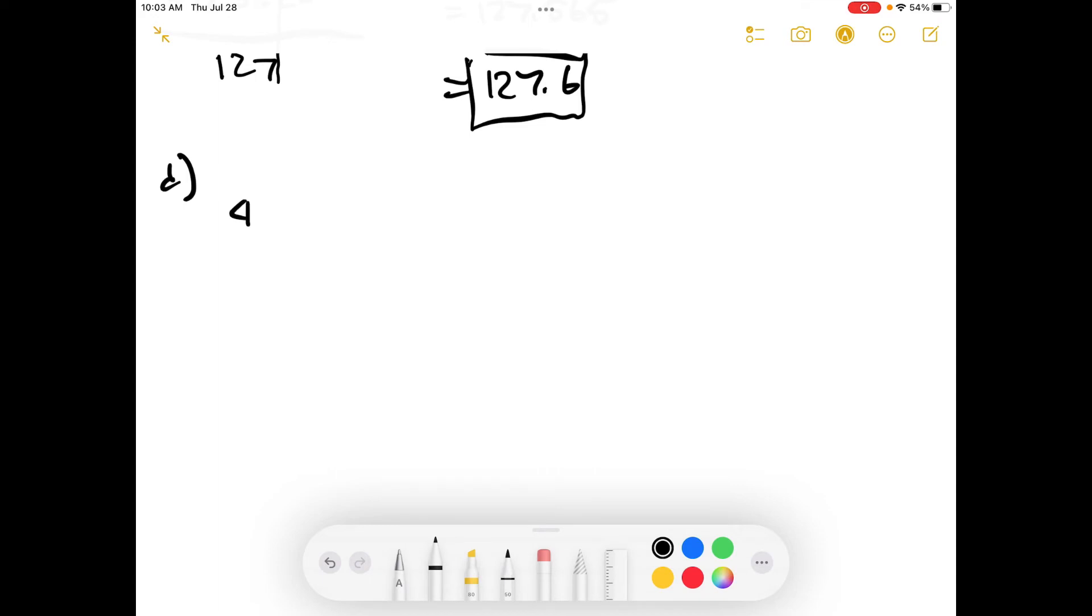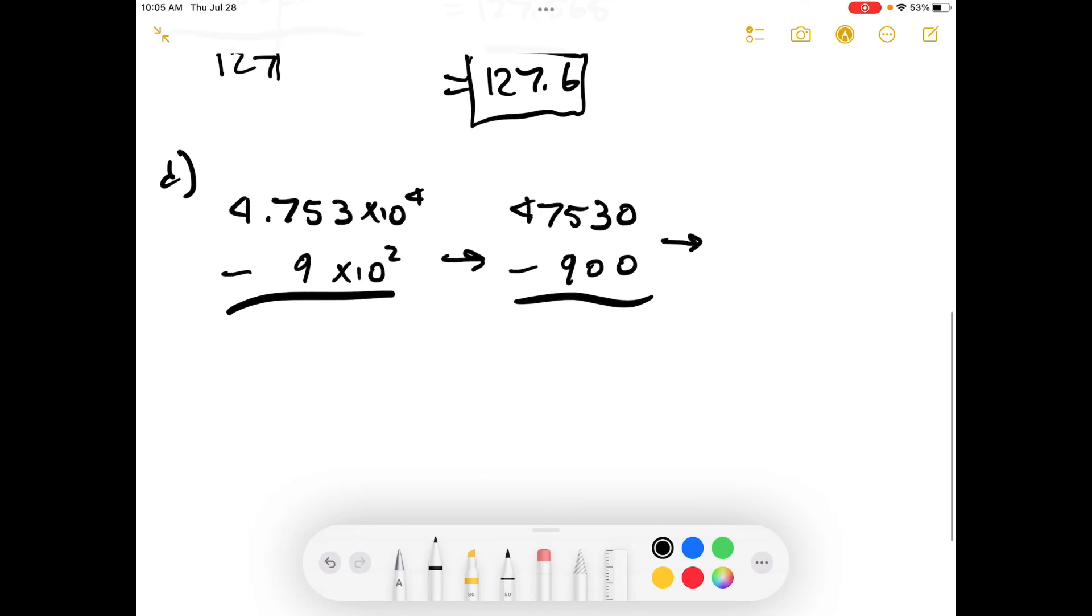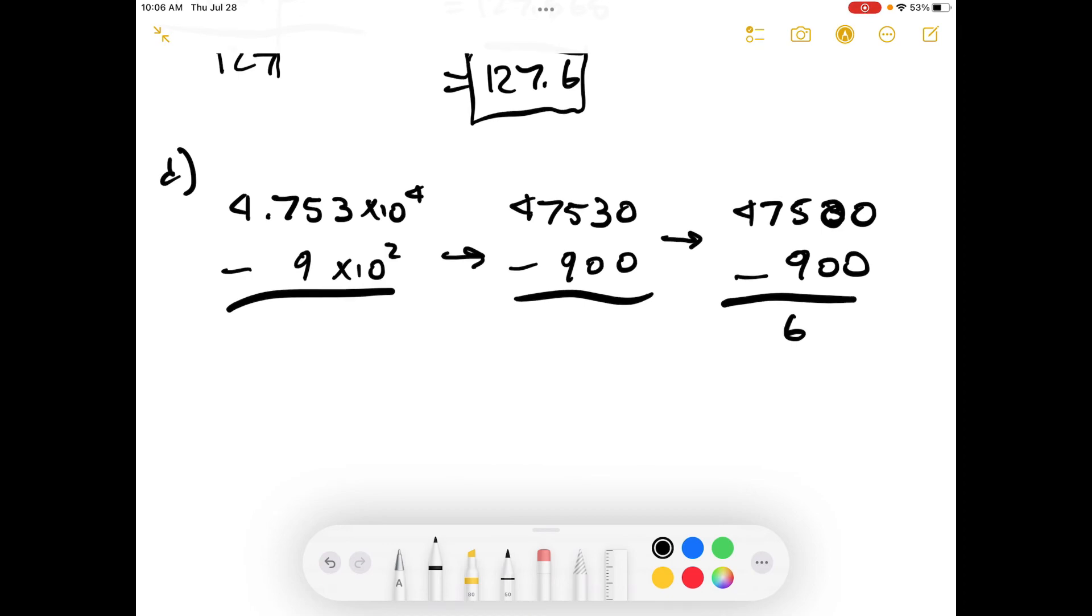D. 4.753 times 10 to the 4, and we're subtracting 9 times 10 to the 2. Okay. So this goes to 47530 minus 900. We should do 47500, and then we have 900. And then we say 15 minus 9 is 6.